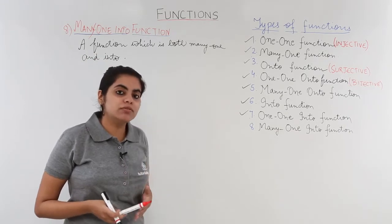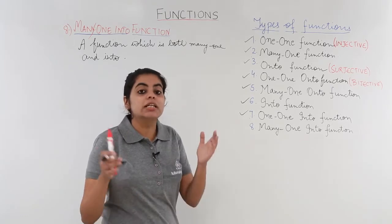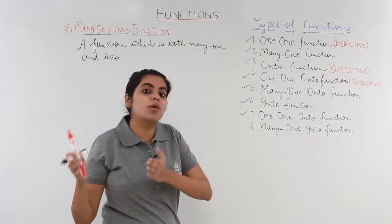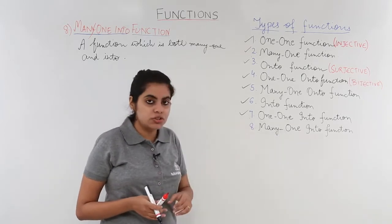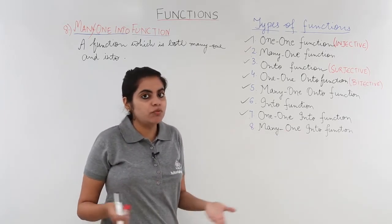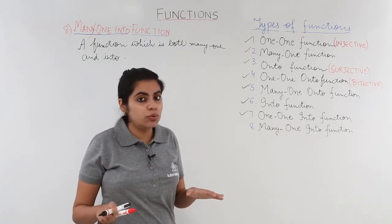Now what was many-one function? Many-one function was the one which was not one-one. That means different elements could have obtained the same image. And what about into function? Into function was the one which was not onto. That means range was not equal to co-domain.